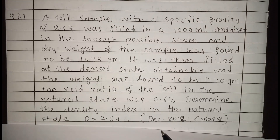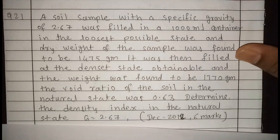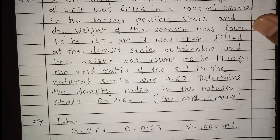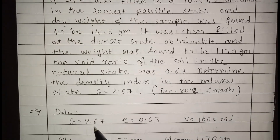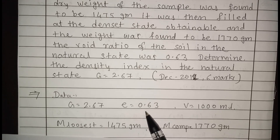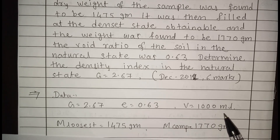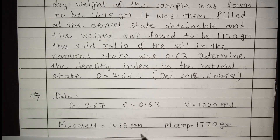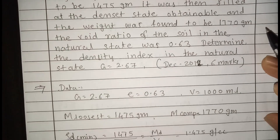This question was asked in December 2012 for six marks. Now we will solve this question. The given data is: specific gravity of soil = 2.67, void ratio in natural state = 0.63, volume = 1000 ml, mass in loosest state = 1475 grams, and mass in compacted state = 1770 grams.